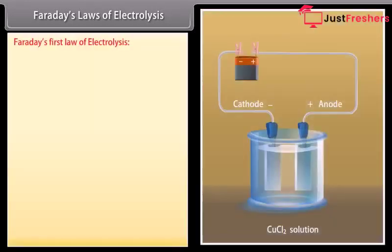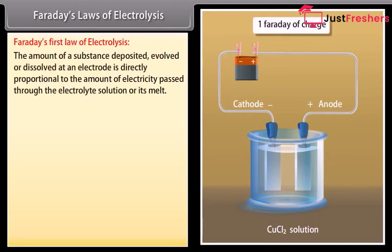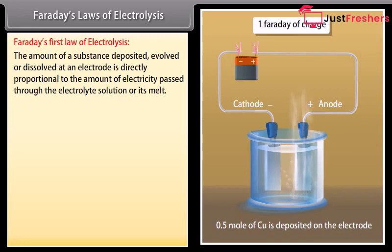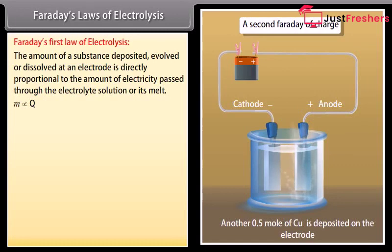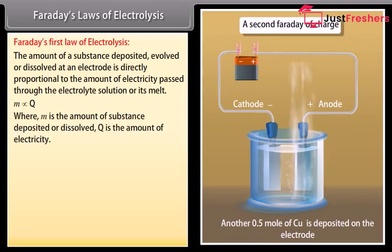Faraday's laws of electrolysis. Faraday's first law of electrolysis: The amount of a substance deposited, evolved, or dissolved at an electrode is directly proportional to the amount of electricity passed through the electrolyte solution or its melt. M is directly proportional to Q, where M is the amount of substance deposited or dissolved, Q is the amount of electricity.